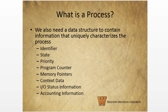We're also going to need some sort of data structure to contain information that uniquely characterizes the process. At any given time that a program is executing, the process can be uniquely characterized by a number of different elements, including those listed here. A process ID is a unique identifier associated with this process to distinguish it from any other. The state tells us what state the process is in — for example, if the process is in the running state, that means it's currently executing.